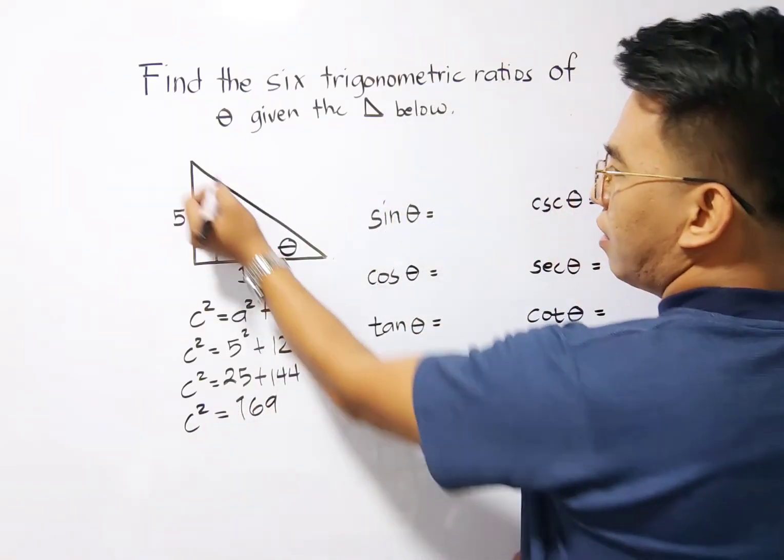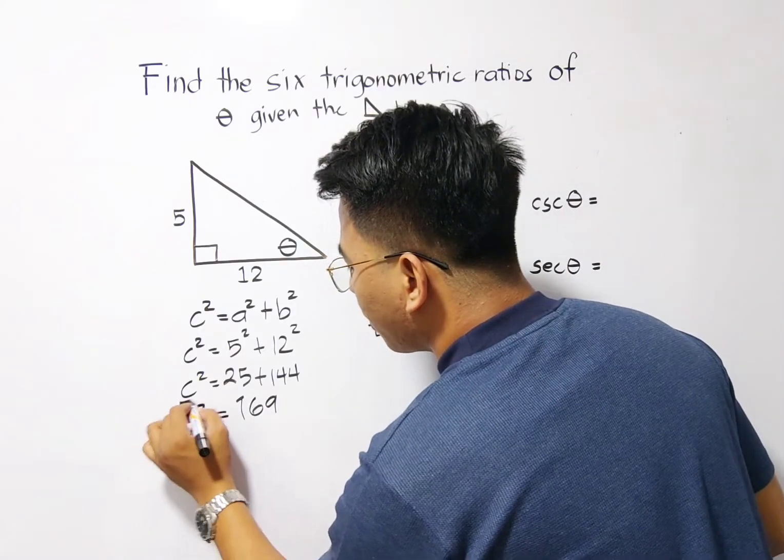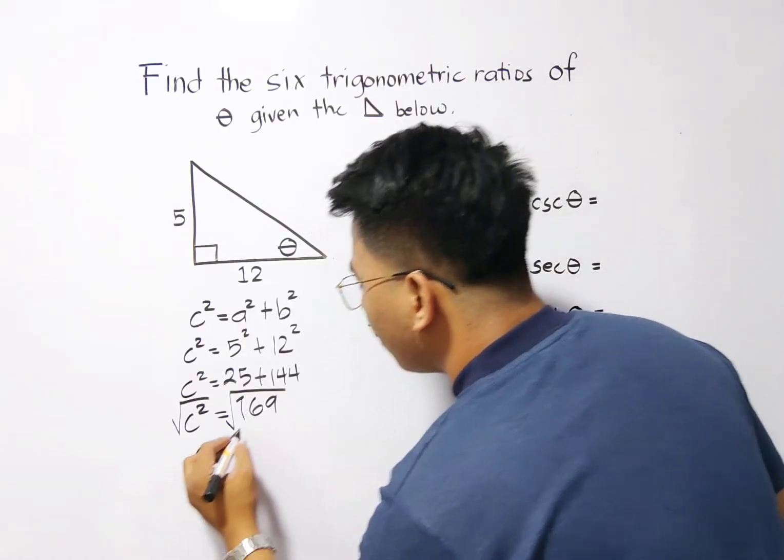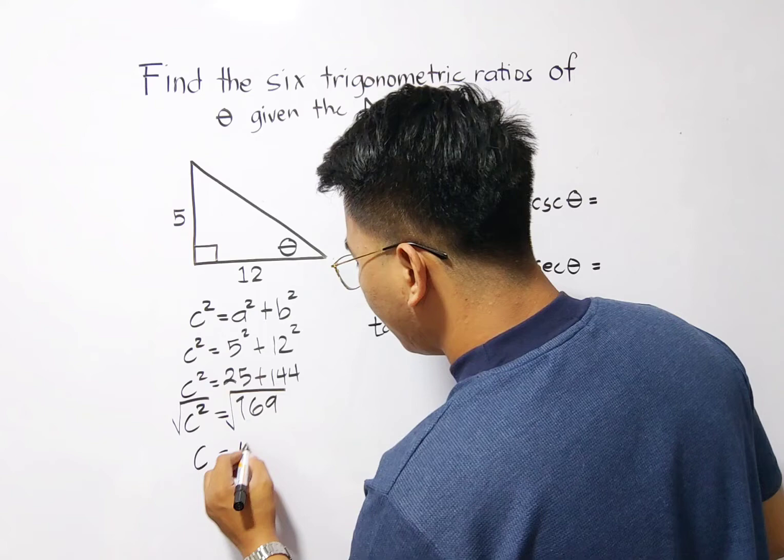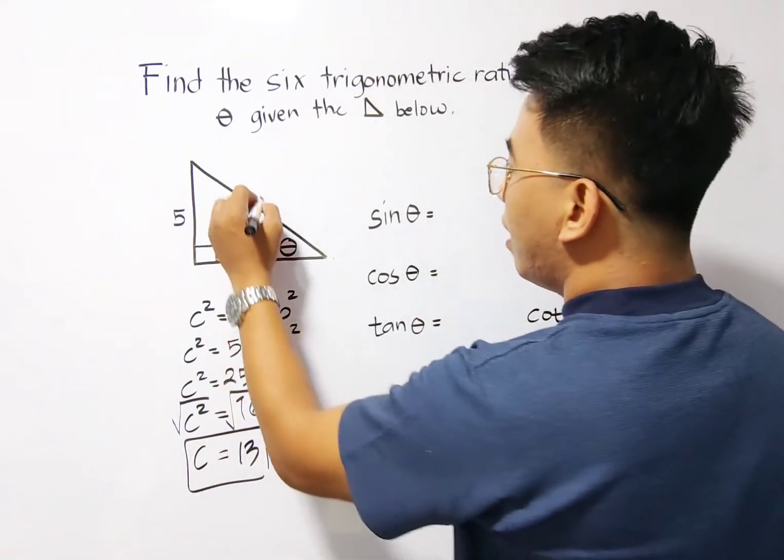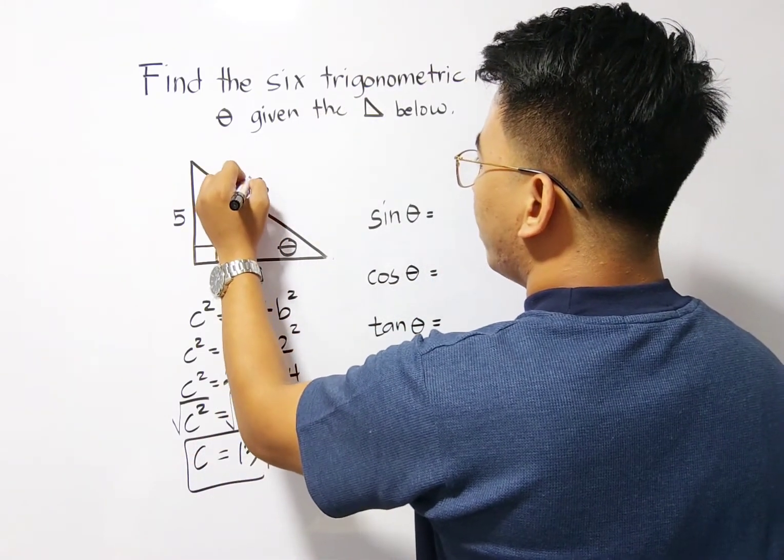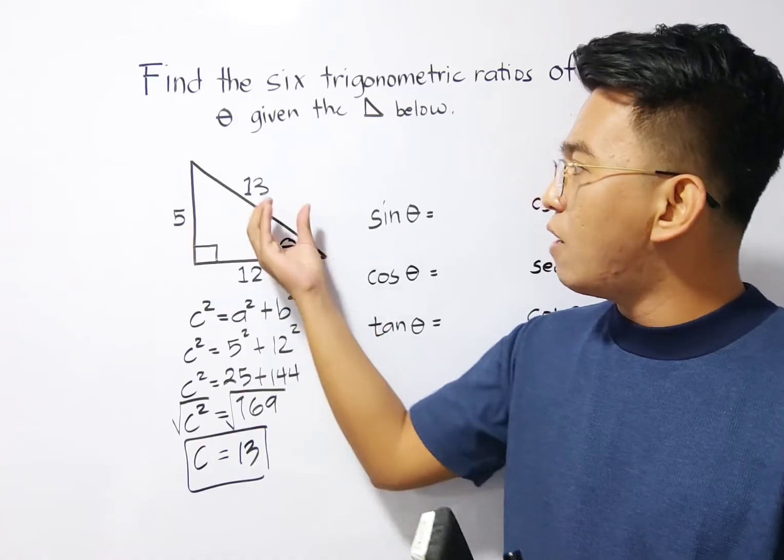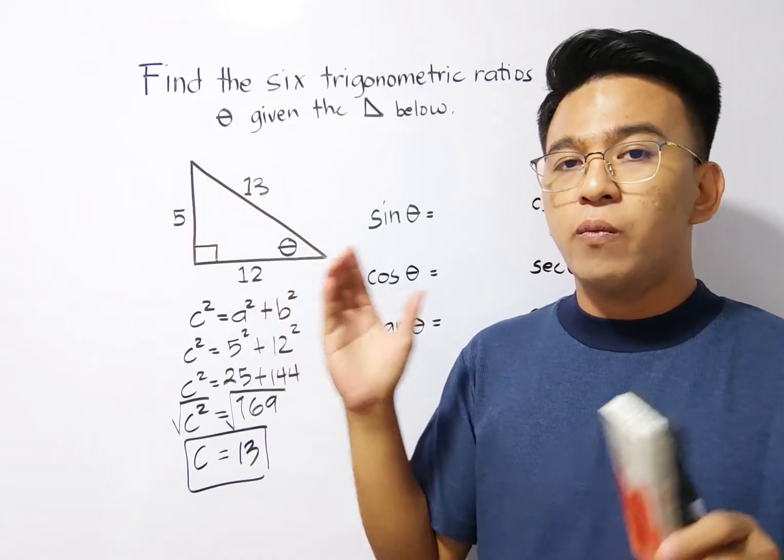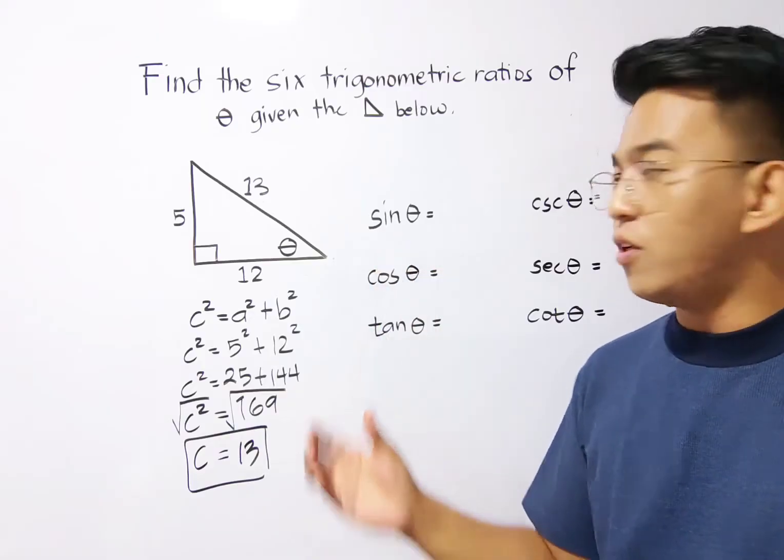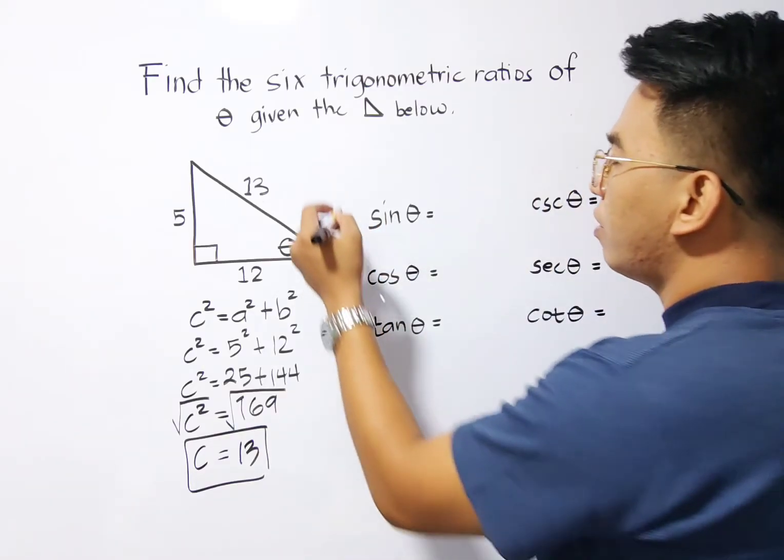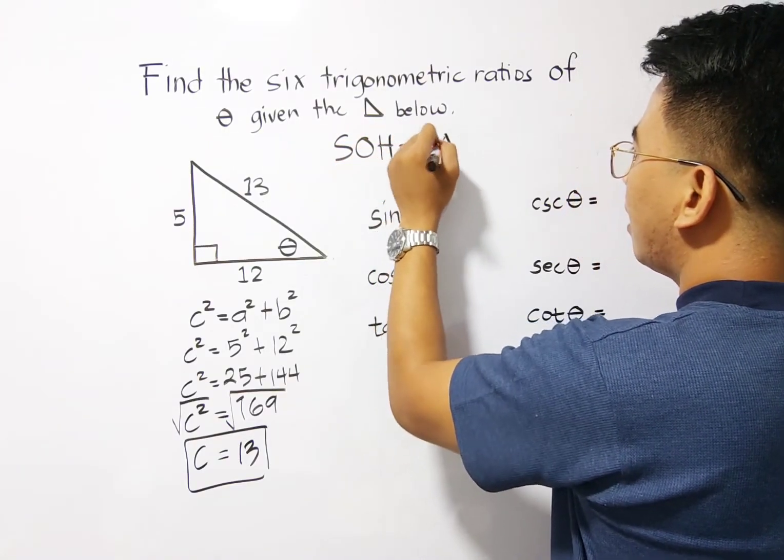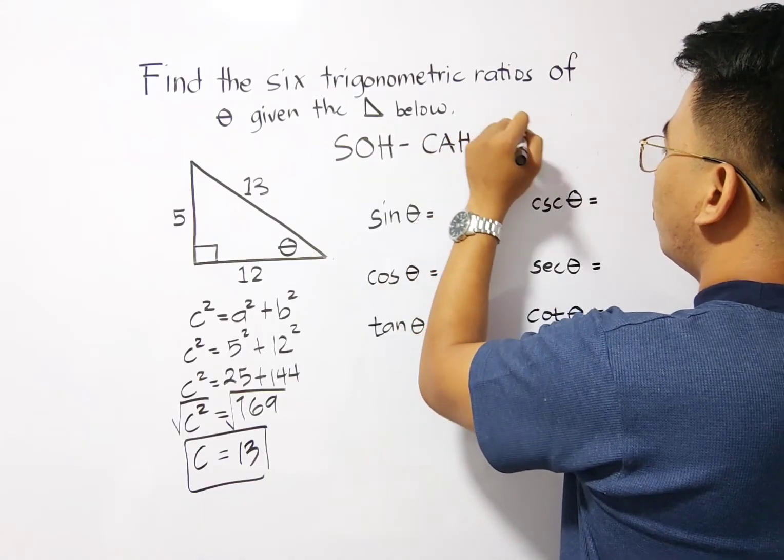So to finally find the length of your hypotenuse, get the square root of C squared, same with 169. The square root of C squared is C, and the square root of 169 is simply 13. This is now the length of your hypotenuse, which is 13. Now, since we are done figuring out or solving for the length of the hypotenuse, we are now ready to find the ratios of these six functions. But remember, you need to remember SOH-CAH-TOA.